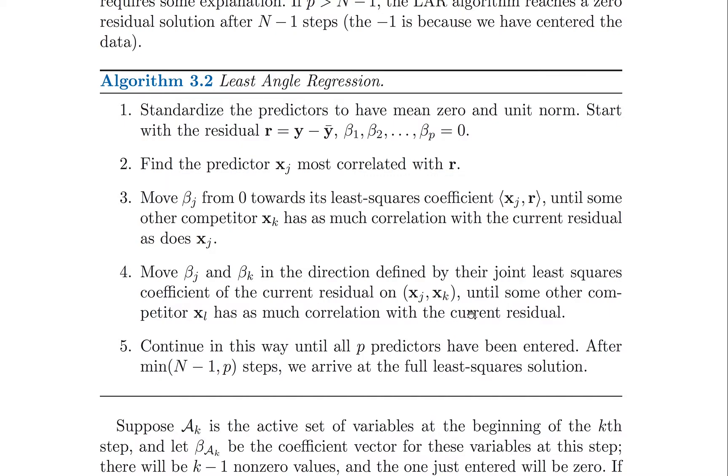At some point, a third variable will become just as important as those first two. So we'll add it to the variables that we're using and move all three of them together in the model until there's a fourth one that's equally good, and so on.